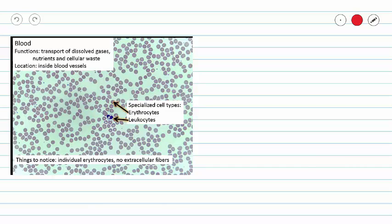When looking at blood, remember that we have two different specialized cell types. I may put an arrow on an erythrocyte and say name this specialized cell type, or I could put an arrow on a leukocyte and say name this specialized cell type — and I would need two different answers for those questions. Also keep in mind that I may put my arrow on a platelet; remember those are not cells, but they are called platelets. This concludes our lectures on connective tissue. If you have any questions, never hesitate to contact your instructor.